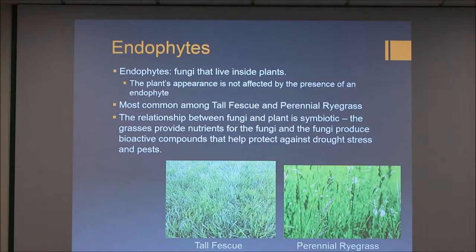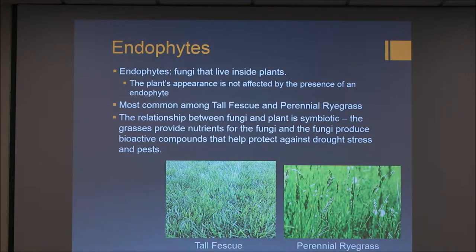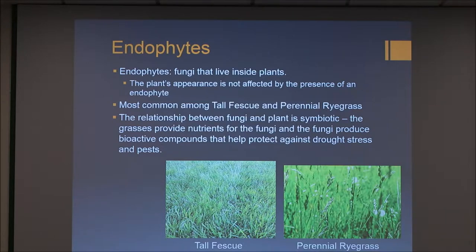I'm going to be presenting on ergovaline. Ergovaline comes from endophytes. Endophytes are fungi that live inside plants. The plant's appearance is unaffected by the presence of an endophyte, so it's not easy to tell if it's endophyte-affected. It most commonly affects tall fescue and perennial ryegrass, which you can see down here. The relationship is symbiotic to the grasses — it's beneficial just as it is to the fungi.